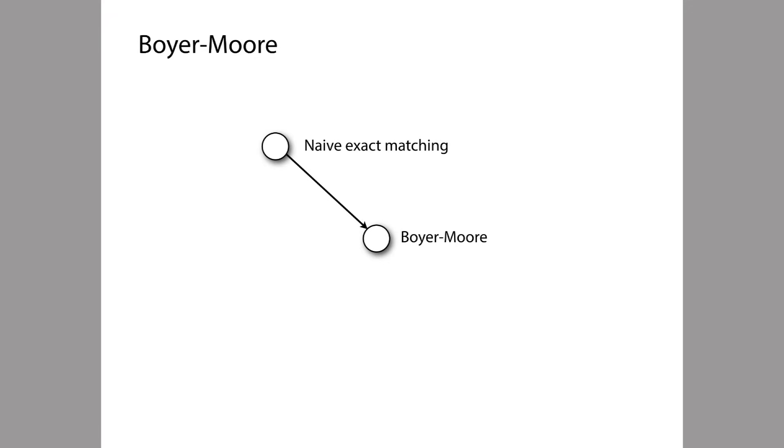Next we'll look at an algorithm called Boyer-Moore. Boyer-Moore is similar to naive exact matching in some ways — it's still going to try alignments and for each alignment it will try character comparisons, but it's going to be clever by skipping many alignments that it doesn't need to examine. Boyer-Moore is a very popular algorithm. It's been around for a long time and it's really the benchmark exact matching algorithm, implemented in many different systems. Chances are very good that at some point you have done a search in a web document or file on your hard drive and that search was implemented using Boyer-Moore.